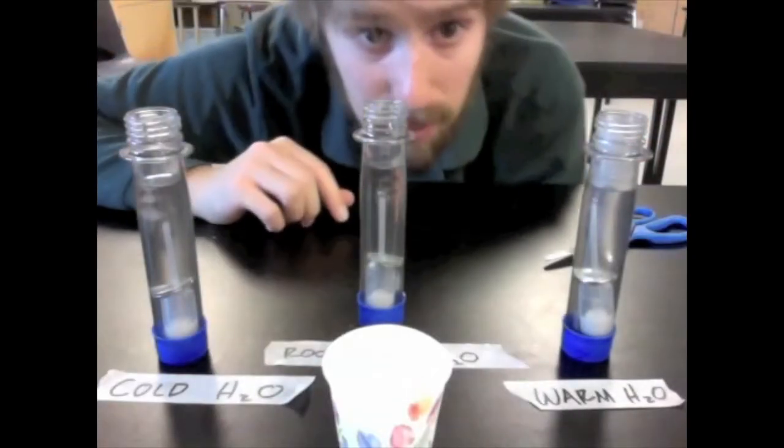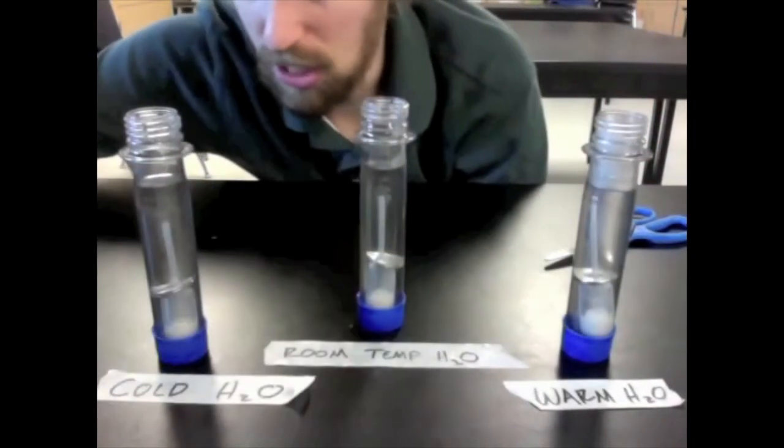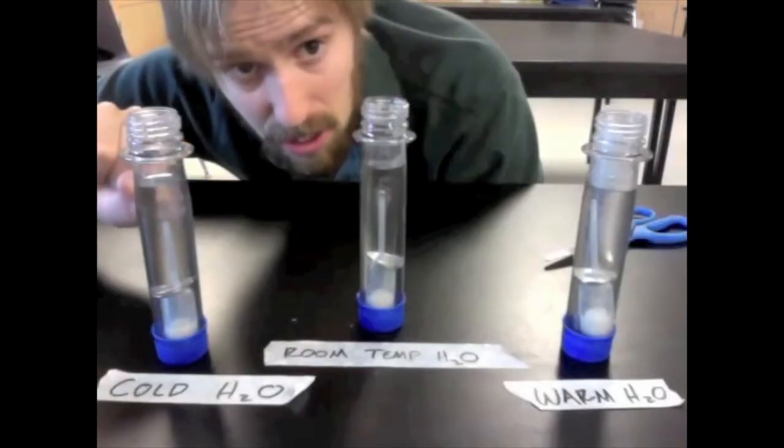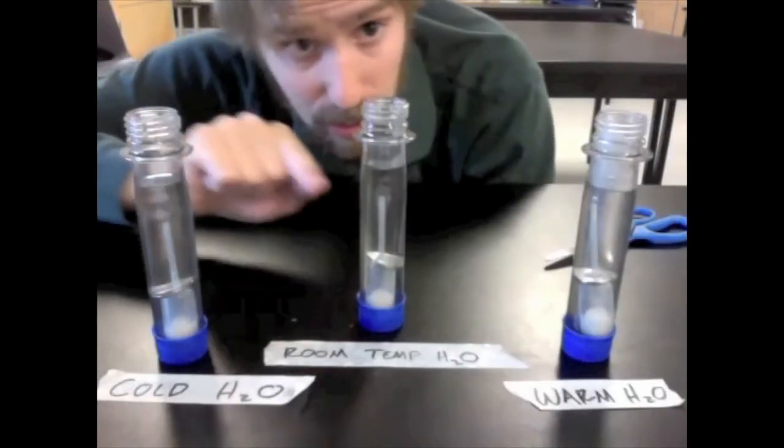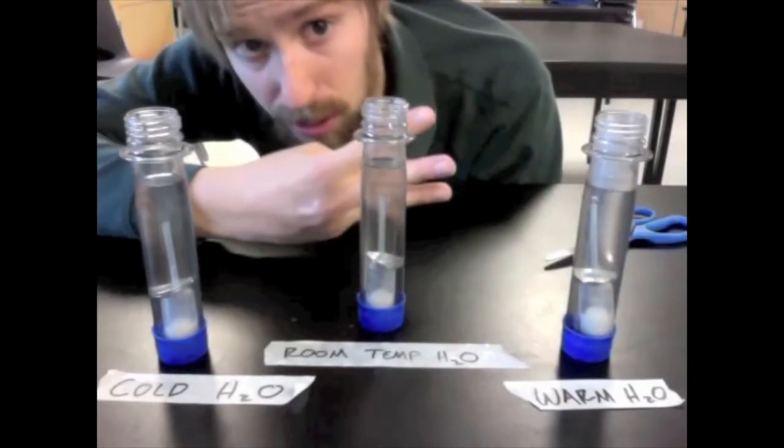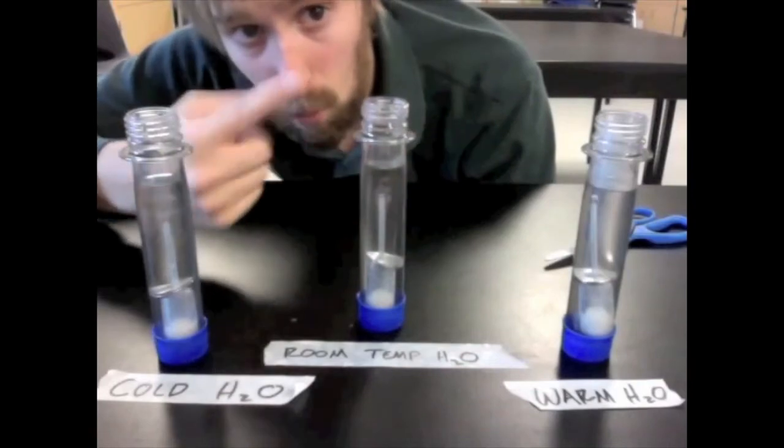All right, now for this to be an accurate trial, we want to make sure that we start collecting data all at the same time. So I'm going to count down from three, and when I give the signal, we're going to start counting bubbles for each one of our three trials. The more bubbles means the faster the reaction of fermentation is occurring. So, three, two, one. Let's go ahead.